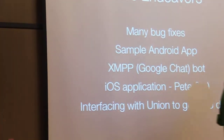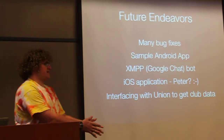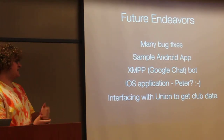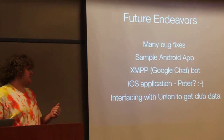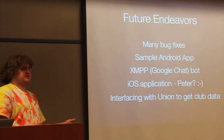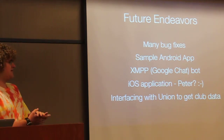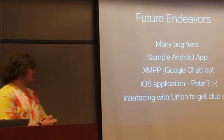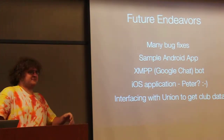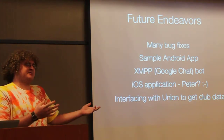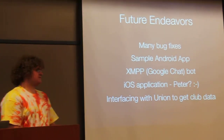There are some bugs in the way it works with the application right now, and we've got a lot of things to fix. We're still going to make the sample Android app. We're also looking into doing a little chatbot so you can chat your search to it and get back search results. Maybe an iOS application too. Another stretch goal would be interfacing with the union to get club data in there, so you can search for someone and see what clubs they're in, or search for clubs and see who's in them.